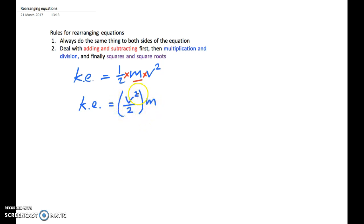So let's write that. We have KE divided by v squared over 2.